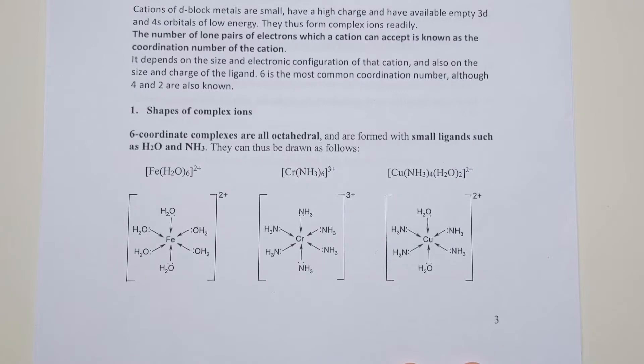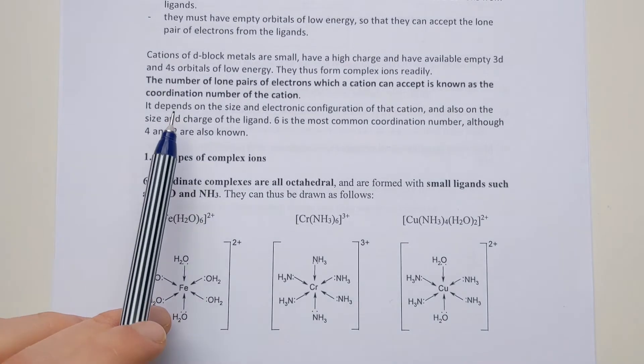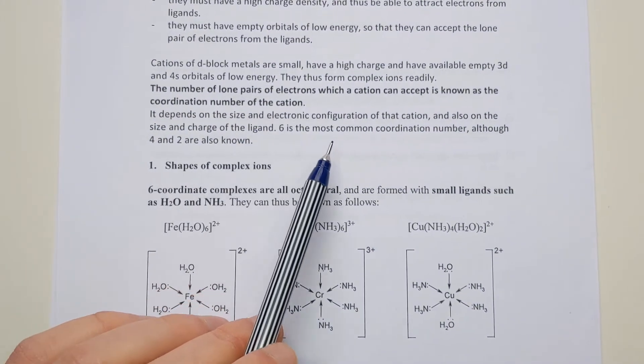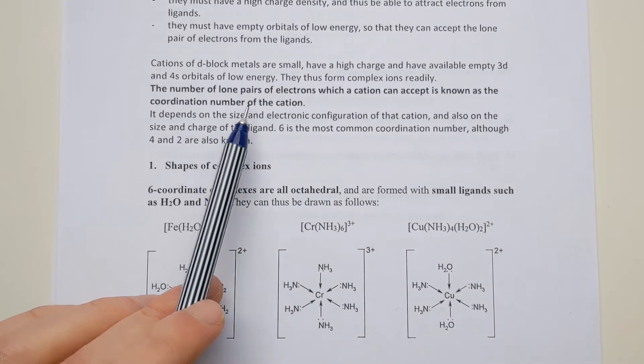The final part of the puzzle in terms of forming a complex or working out what a complex looks like is how do you know how many ligands to put around the metal ion, because in some cases it seems to be a different number. The concept we're looking at is the coordination number, which is mentioned halfway up page three. The number of lone pairs of electrons which a cation can accept is known as the coordination number of the cation.